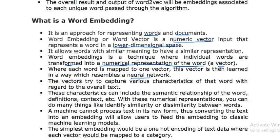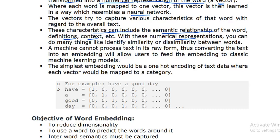The vector tries to capture various characteristics of that word with regards to the overall text. These characteristics can include the semantic relationship of word definitions and context. With these numerical representations you can do many things, like identify the similarity and dissimilarity between words. A machine cannot process text in its raw form, thus converting the text into embeddings will allow users to feed the embeddings to classic machine learning models.